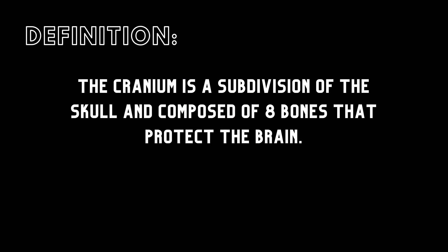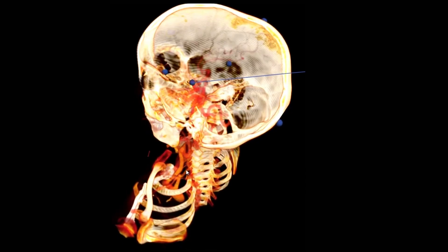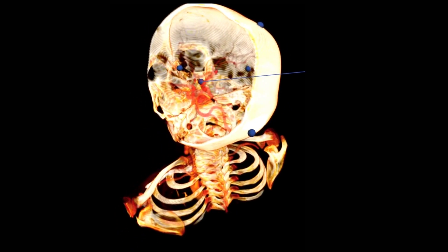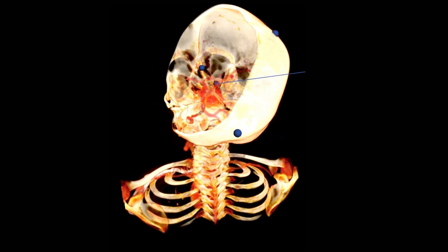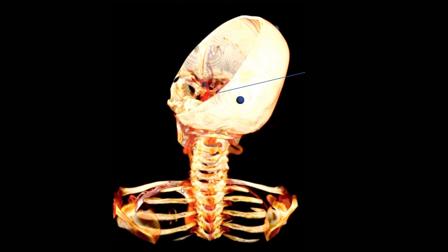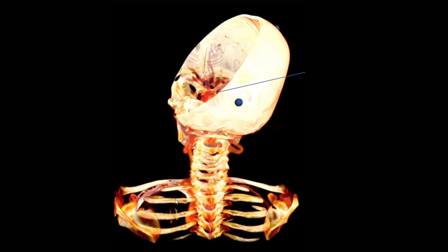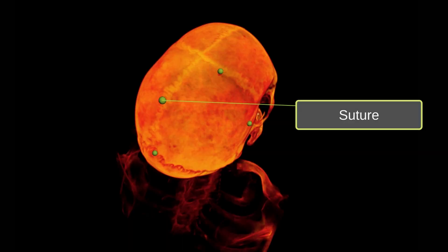The cranium is a subdivision of the skull and is composed of eight bones that protect the brain. These bones can be a bit tricky to classify because they have qualities of both flat and irregular bones. The bones of the cranium are connected by sutures, which are immovable joints.